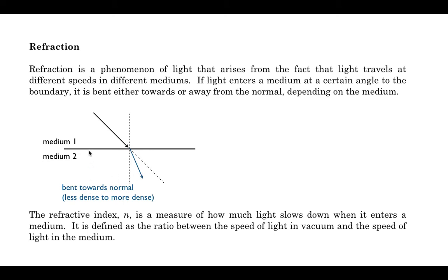So the angle becomes smaller and it bends towards the normal. And this is what happens when we go from something that's less dense to something that's more dense. So for example, when we go from air into water, something that's less dense to more dense.